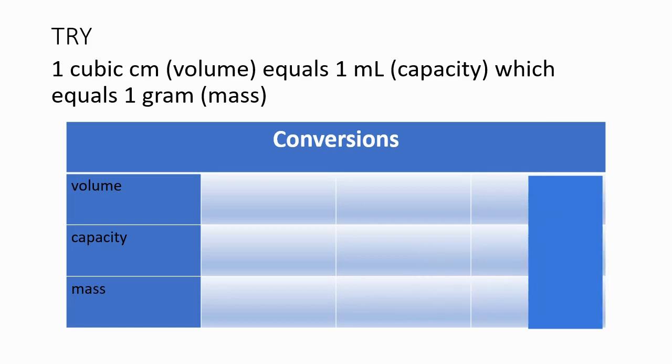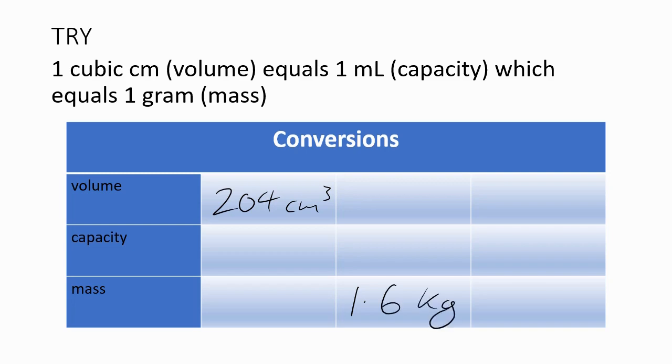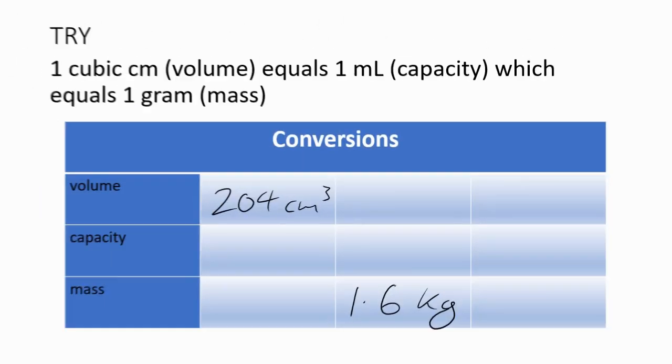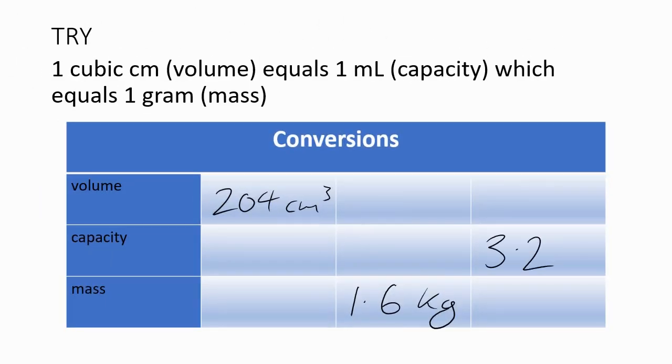So let's say you've got a volume of 204 centimetres cubed. Let's say over here, you've got a mass, a mass of 1.6 kilograms. Let's say over here, you've got a capacity, a capacity of 3.2 litres.